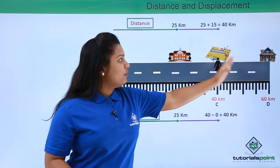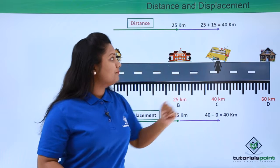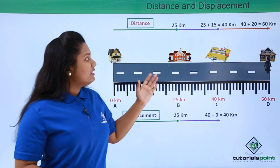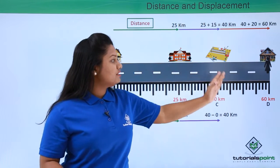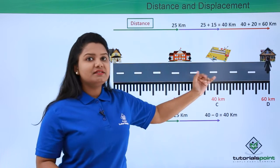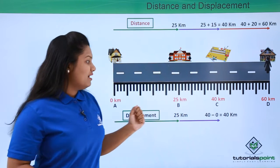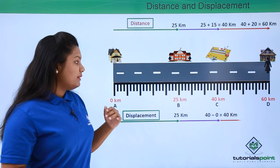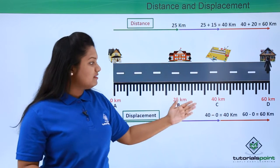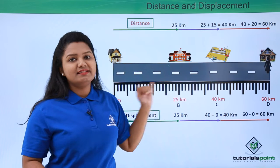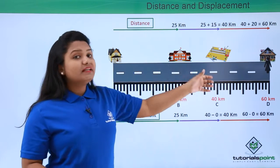Now let me move to point D, which is your house. The total distance covered on reaching point D is 60 kilometers, and the displacement is again final minus initial, which is 60 minus 0, that is 60 kilometers.